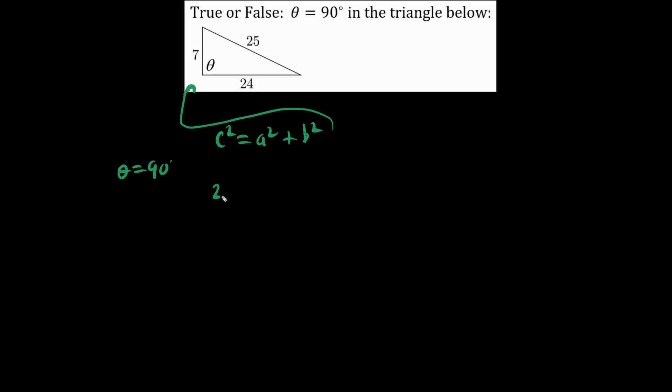In this case, indeed 25 squared equals 7 squared plus 24 squared. We memorize this fact because this is a Pythagorean triple.